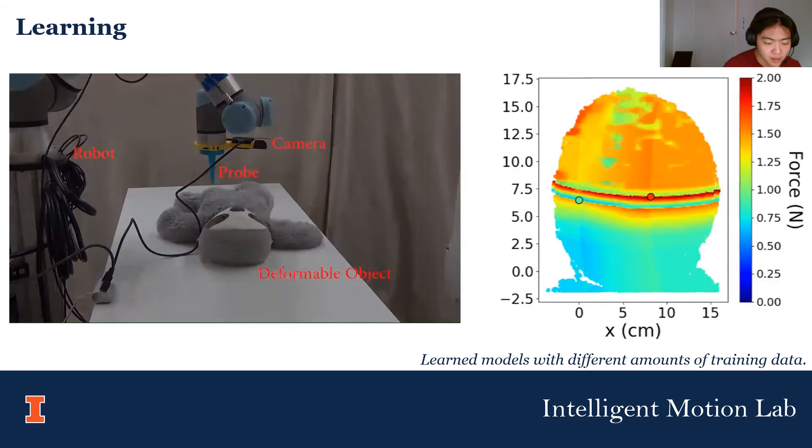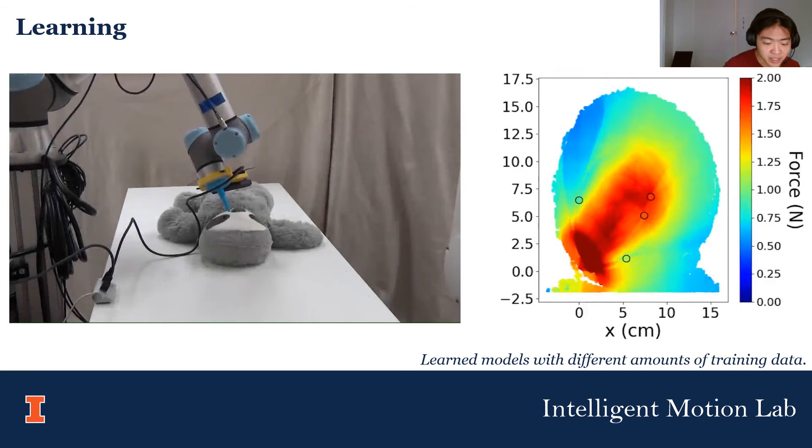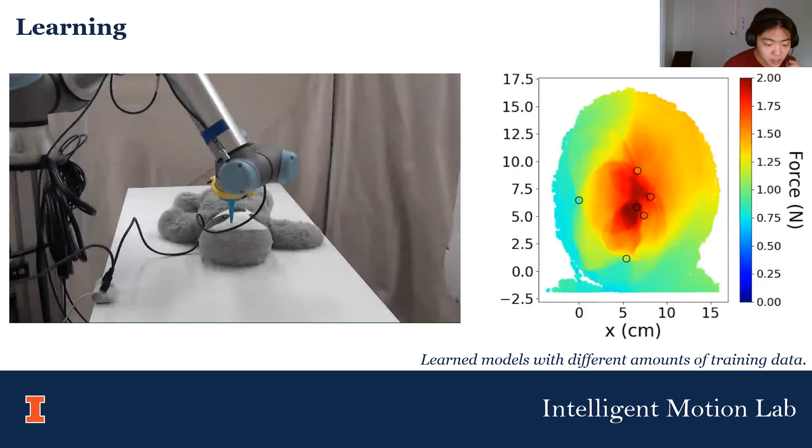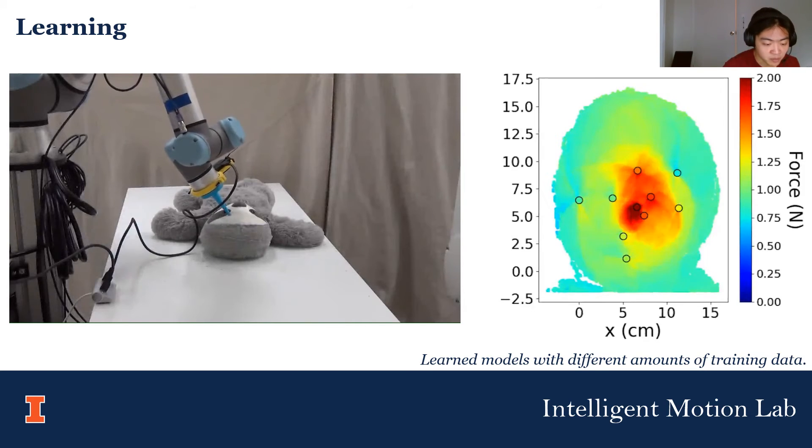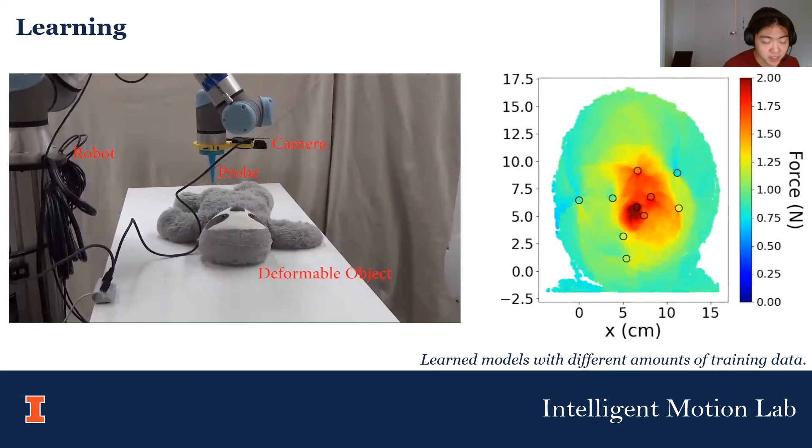In the experimental phase, we learn how the object reacts to poking at a single point. This greatly reduces the scope of learning, so we can still capture important properties of the deformable object with just a small amount of experience.